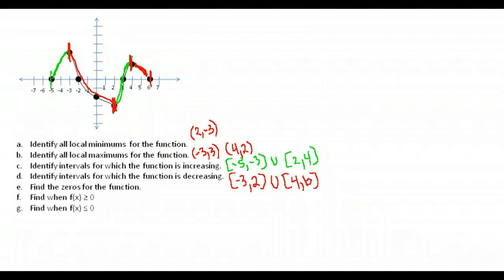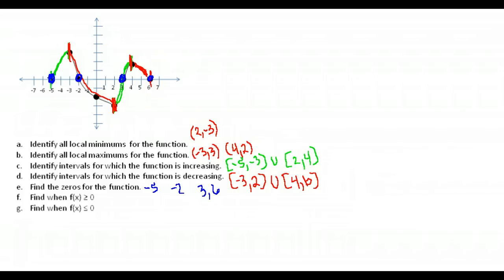Find the zeros of the function. Zeros are any place the graph touches or crosses the x-axis — where y is zero. There are four: negative five, negative two, three, and six. Remember, unlike x-intercepts written as points, when asked for zeros you only give the x values: negative five, negative two, three, and six.